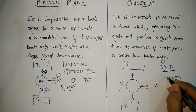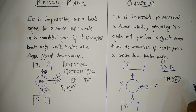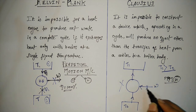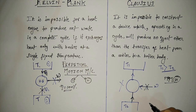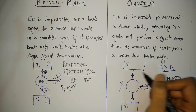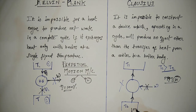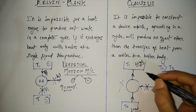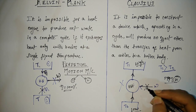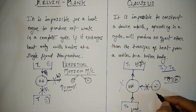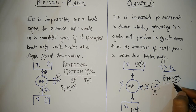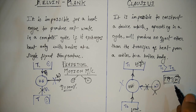This imaginary machine is known as PMM1. PMM2, or Perpetual Motion Machine of the second kind, refers to the same process but in reverse — that is, without any supply of work, the cooling or refrigeration effect, or the heat pump effect, is going on. Heat is being transferred from a low temperature to a high temperature without any provision of work. This kind of imaginary machine is known as PMM2.